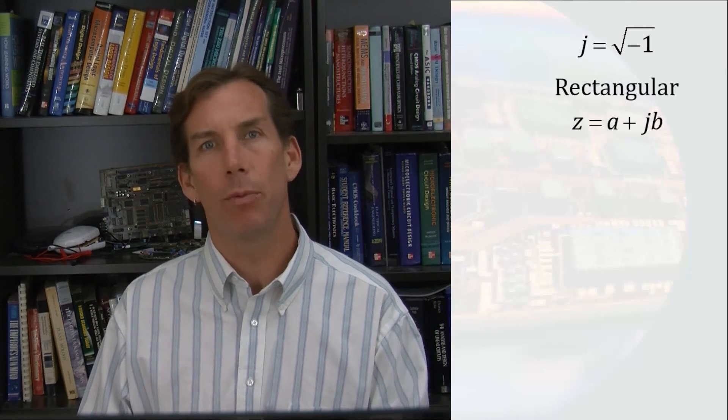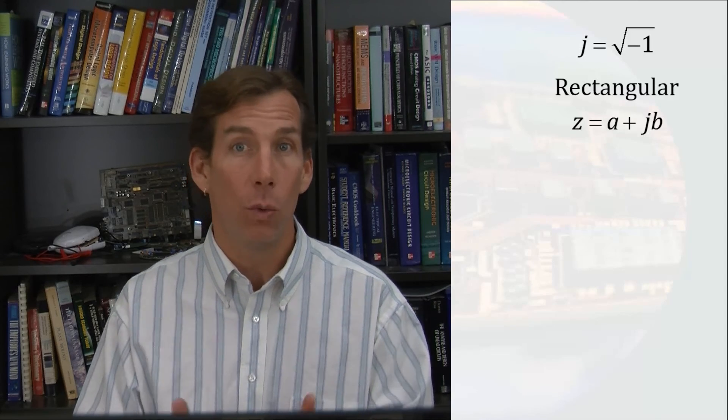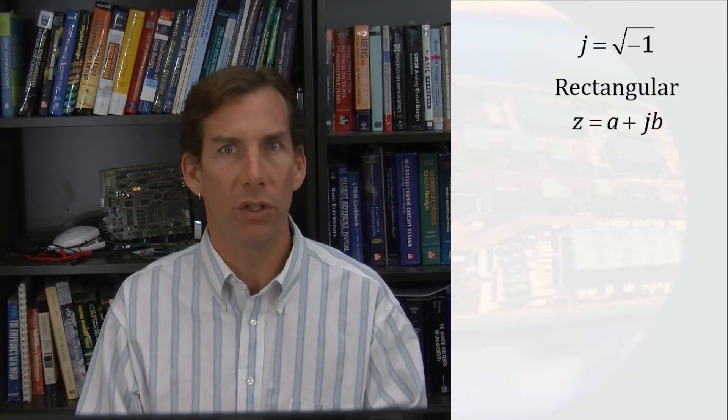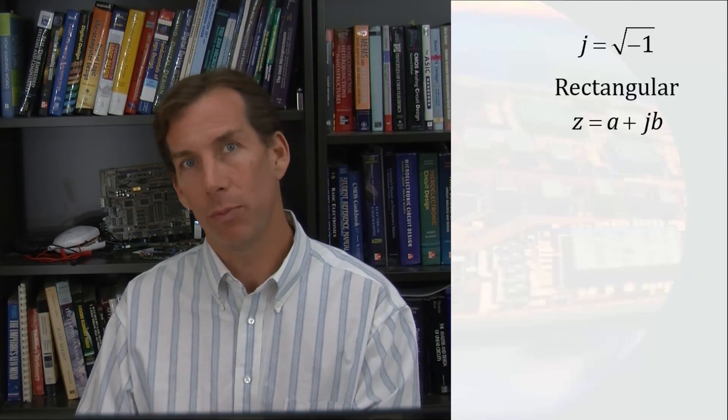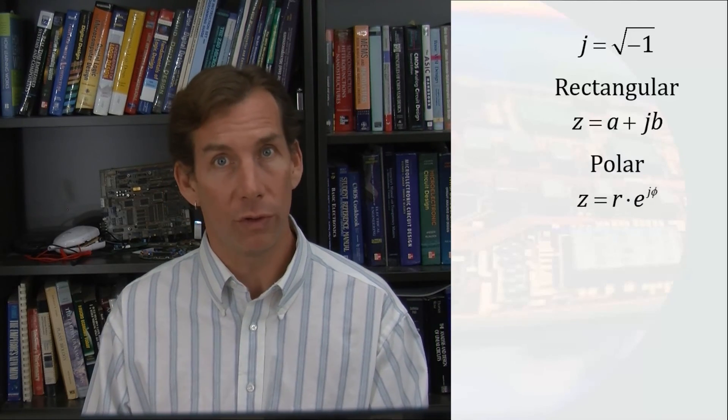To review, in electrical engineering, we use j to denote the imaginary number. So j is equal to the square root of negative one. There are two representations for complex numbers. One is a rectangular format, where the x coordinate represents the real number, and the y coordinate would represent the imaginary number.